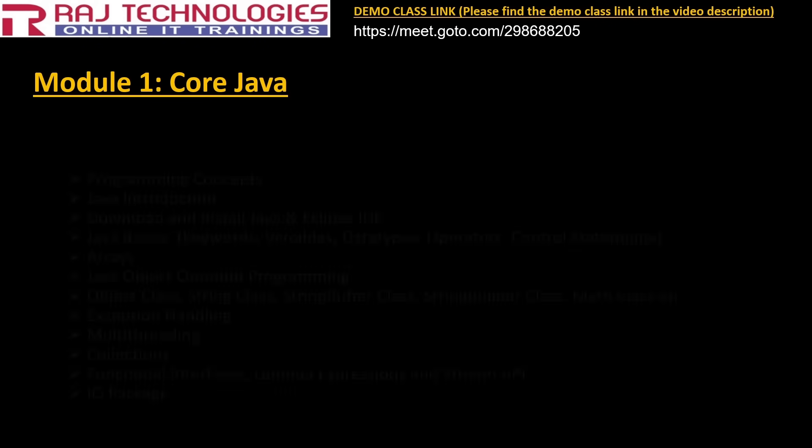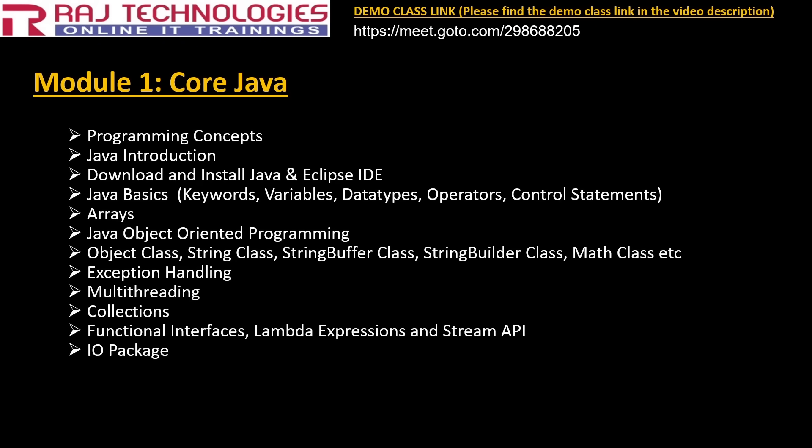Coming to Module 1 — Core Java — the contents we discuss initially start with programming concepts. If you are not having any idea on programming, this topic is very important. If you want to learn any programming language like C, C++, Java, .NET, or Python, having a basic idea on programming concepts makes entering into any language very easy. Then we go with Java introduction, how to download and install Java, and we are going to use Eclipse IDE in our course. We also cover basics like keywords, variables, data types, operators, Scanner class, control statements like if statement, switch statement, while loop, for loop — a lot of example programs.